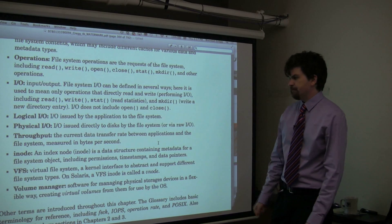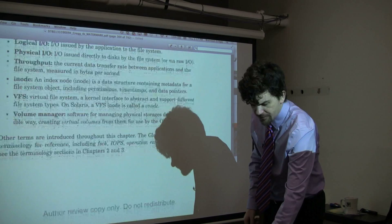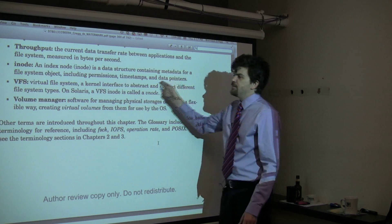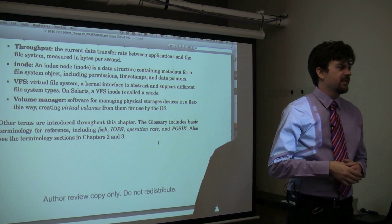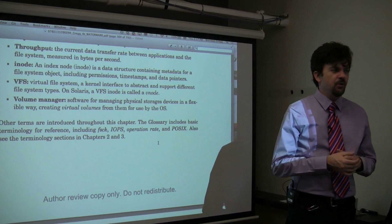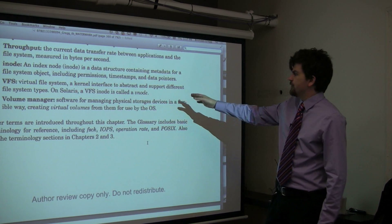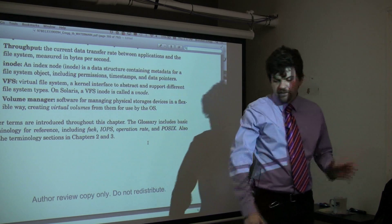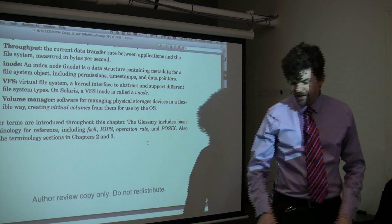Throughput is the current data transfer rate between applications and the file system, measured in bytes per second. An inode is an index node containing metadata for a file system object. All objects in a file system have an index node - well, at least in most file systems based on UFS and FFS. VFS is a virtual file system, the abstraction we use so that the kernel can support different file system types. And you may have a volume manager as well.